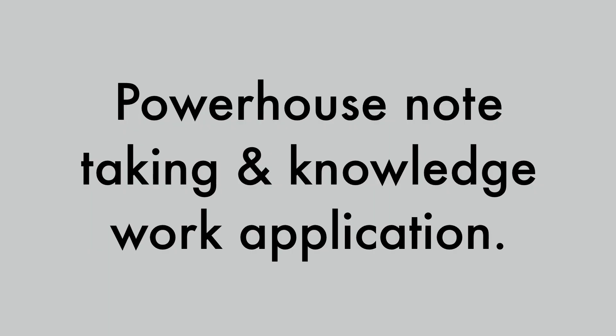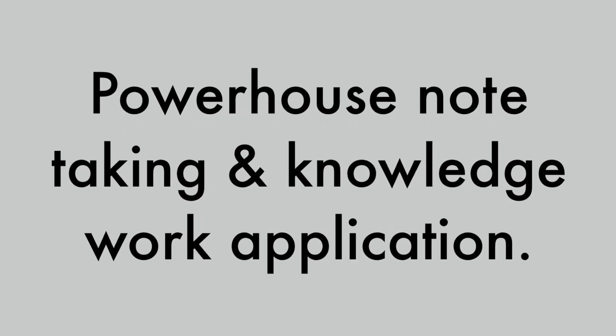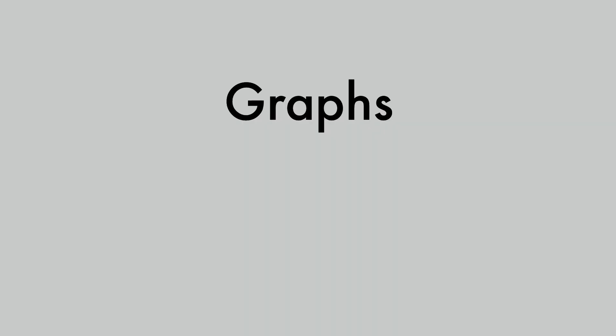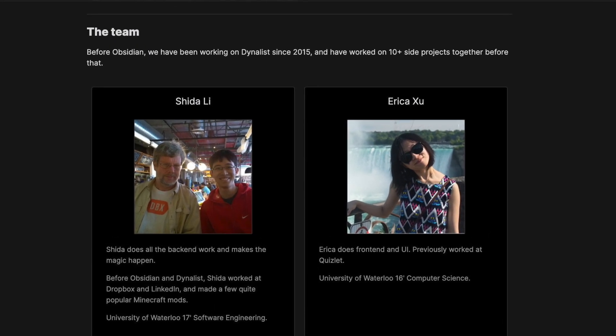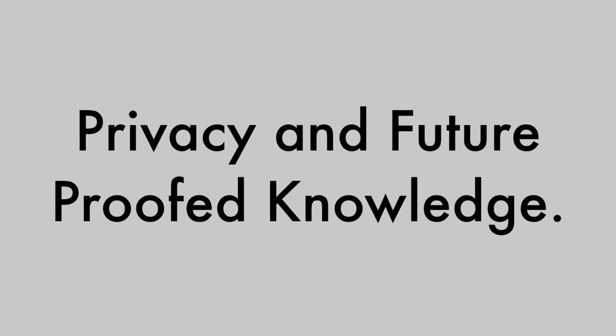Obsidian, on the other hand, is a powerhouse note-taking and knowledge work application at an amazing price of $0. It has most of Roam's features and even expands on areas like graphs, local storage, and privacy. The Obsidian team is a two-person show with extremely impressive developers working at a high development pace. The lack of block-level outliner structure is the main differentiator, but it is a clear choice for people who are strongly interested in privacy and future-proofed knowledge.